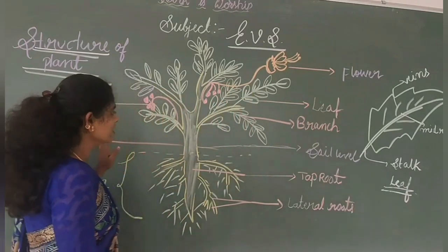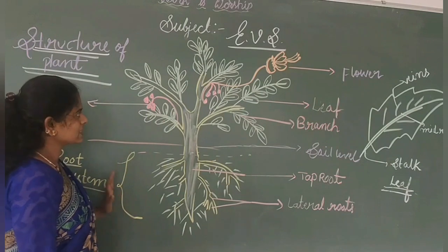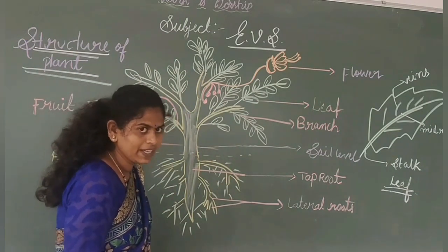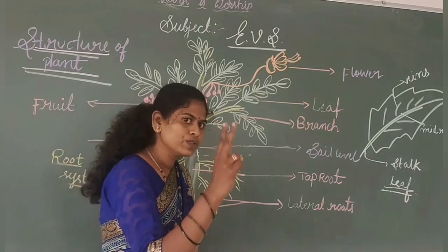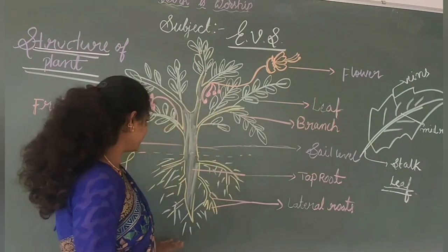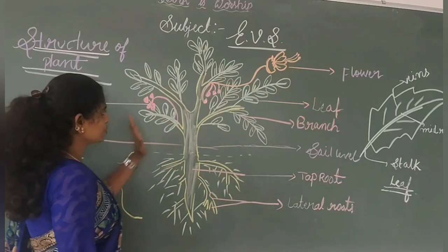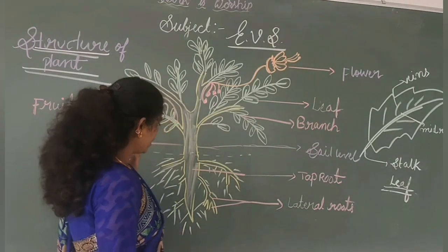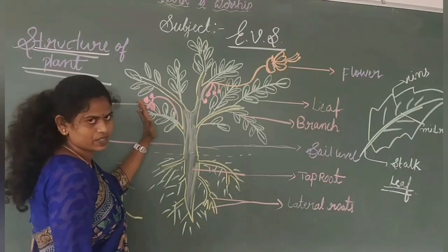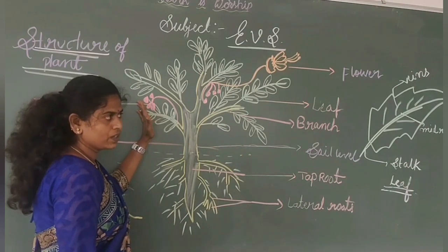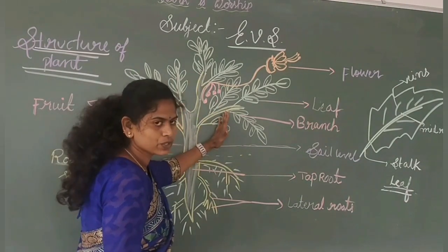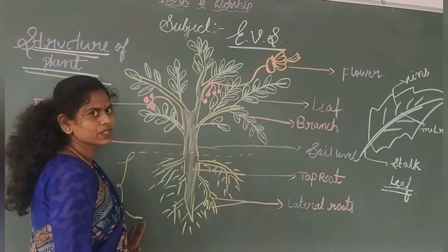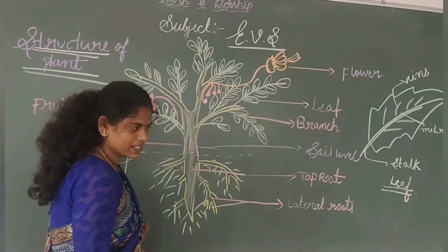All of you are seeing the structure of the plant. Basically, in the structure of the plant, two systems are present: the root system and the shoot system. We will discuss which parts come under the root system and which parts come under the shoot system.